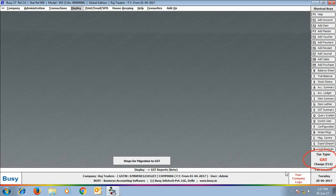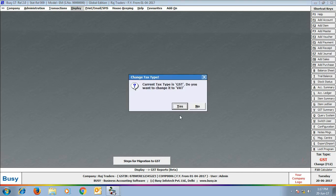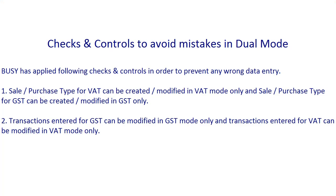On the right-hand side of the main screen, a label shows the current tax type, and you can change it by clicking F12. If you're working in GST mode, you can switch to VAT mode, and vice versa. Busy has applied certain checks and controls to avoid mistakes in dual mode: sale and purchase types for VAT can be created and modified in VAT mode only, and sale/purchase types for GST can be created and modified in GST mode only.